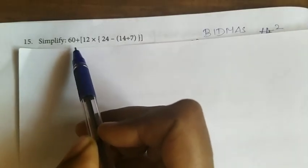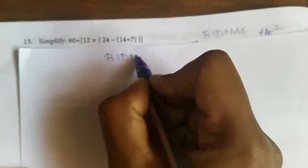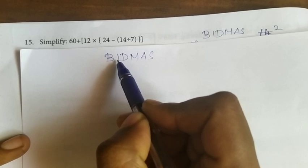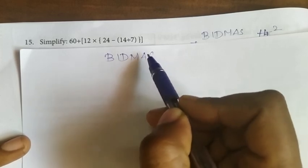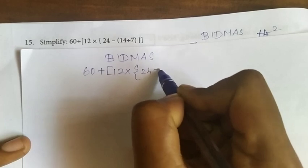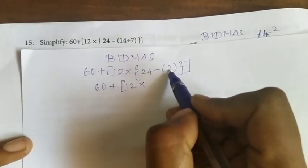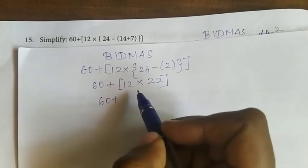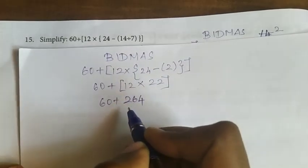Fifteenth question: Simplify. This comes under order of operations. According to BIDMAS, we first simplify numbers in the bracket, then indices, then divide, then multiply, then add, then subtract. The expression is 60 + 12 × (24 − (14 ÷ 7)). The inner bracket: 14 ÷ 7 = 2. Then 24 − 2 = 22. Then 12 × 22 = 264. Finally 60 + 264 = 324.